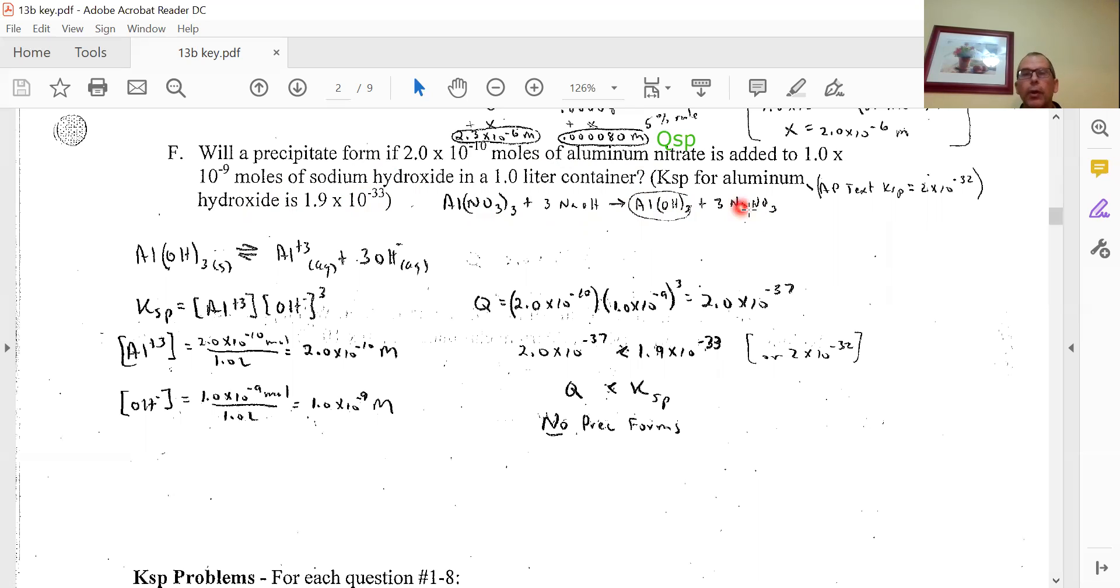You'll focus on aluminum hydroxide because that's the least soluble, and the problem gives you the Ksp and asks specifically about that. I'll take Al(OH)3 and do the dissociation equation: Al^3+ plus 3OH-. Then write the Ksp expression: Ksp equals [Al^3+] times [OH-]^3. This is where you've got to be careful,